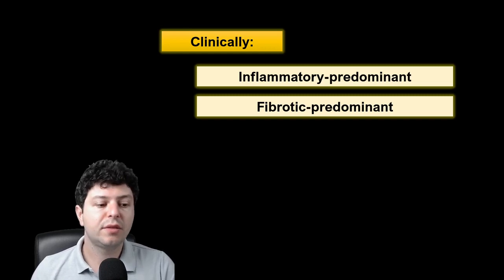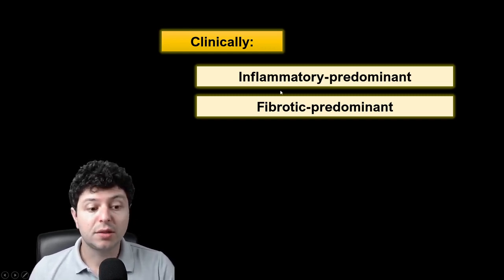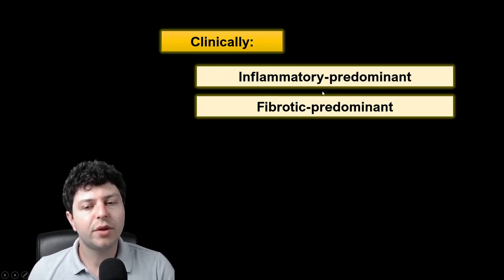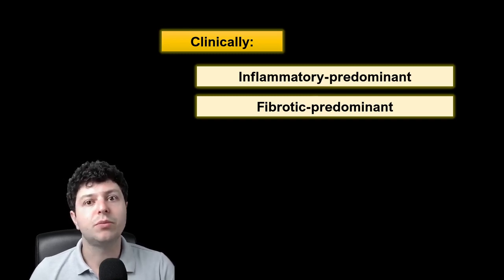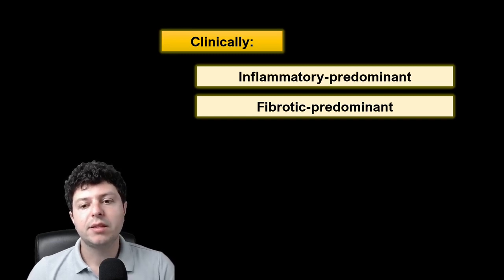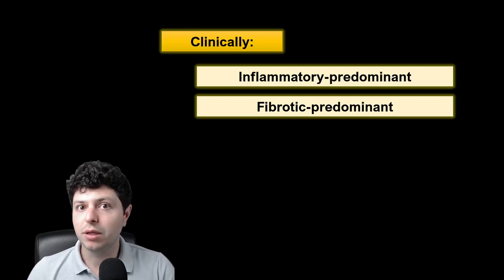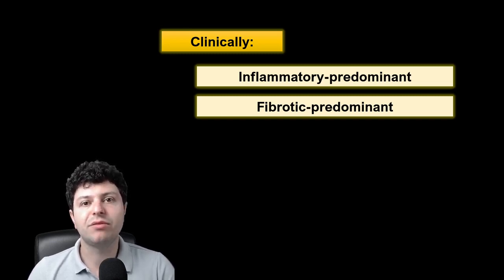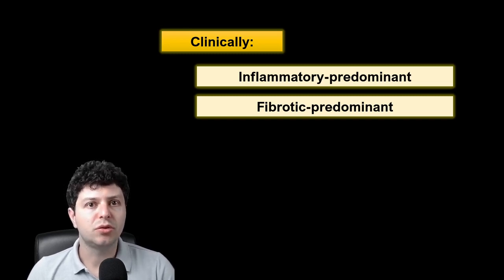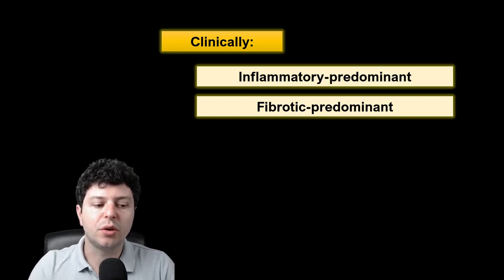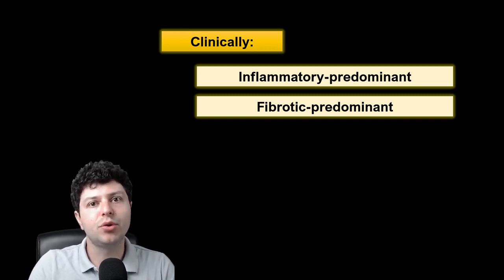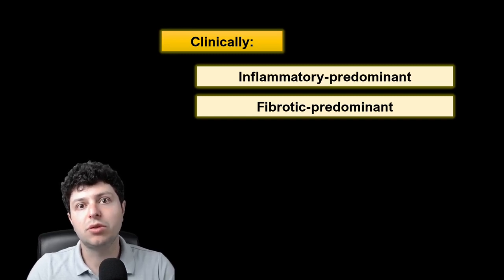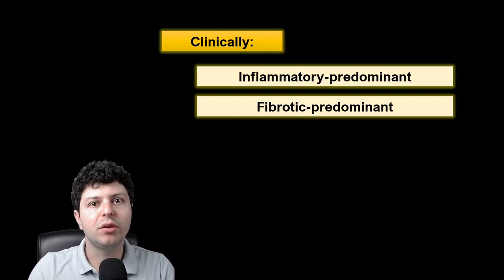For example, you would give anti-inflammatory treatments such as corticosteroids to attempt to stabilize or reverse an ILD if the disease is inflammatory. If the disease is fibrotic predominant, however, anti-inflammatory treatment will likely not work — it could even be detrimental, based on results from trials such as the PANTHER-IPF study. In cases of fibrotic predominant disease, you would want to give anti-fibrotic treatments such as nintedanib or pirfenidone, if they are approved for the condition you are trying to treat.